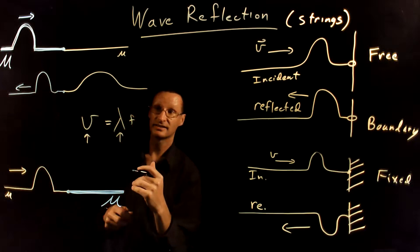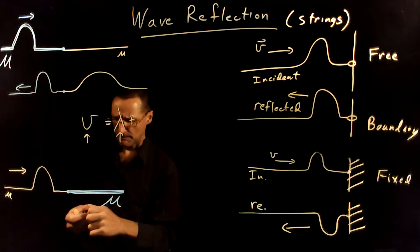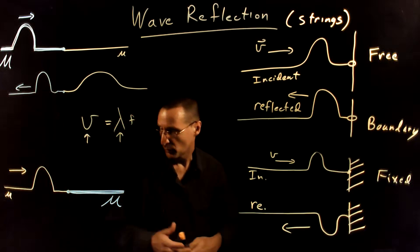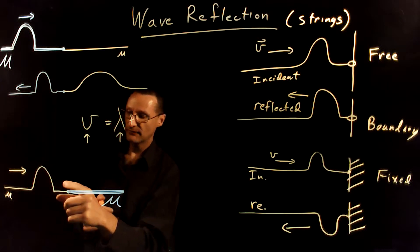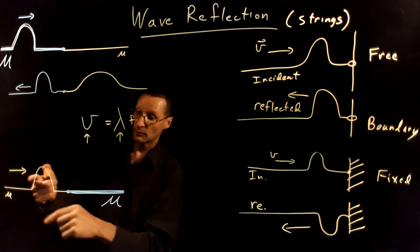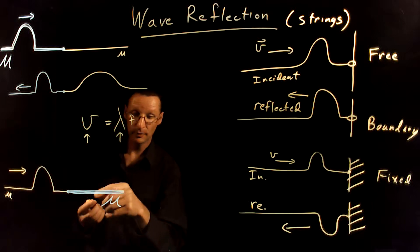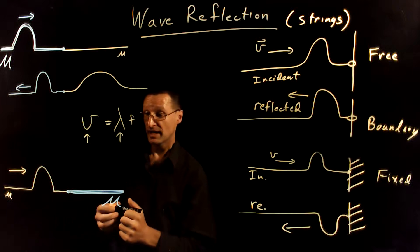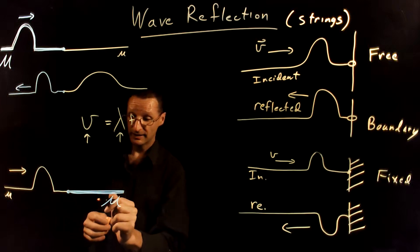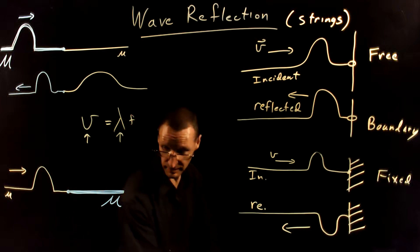What happens in this example where you switch this - where you have a less massive string with an incident wave? What happens at the boundary when it encounters a more massive string? Let's talk about the transmitted wave first.